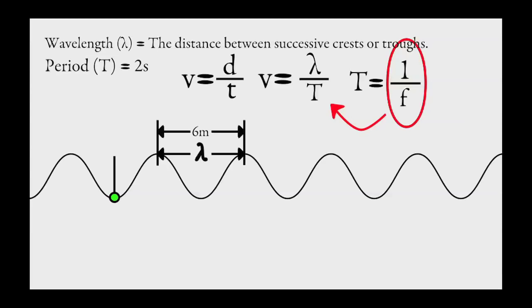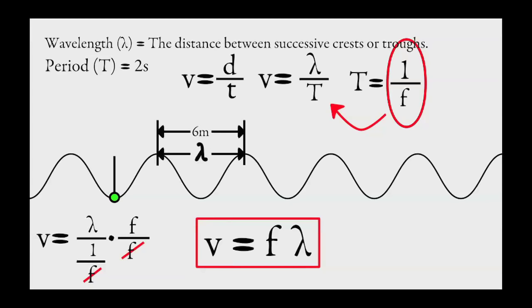That will give us v equals lambda over 1 over f. Multiplying through by f over f, we can cross them out. And we're left with v equals f lambda, the formula for the speed of a wave. This is so exciting. Let's double box it.